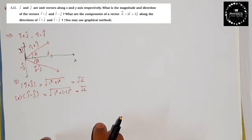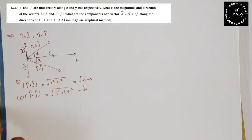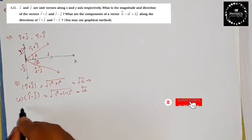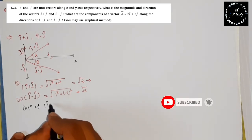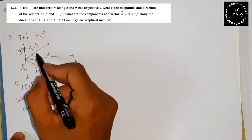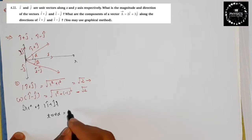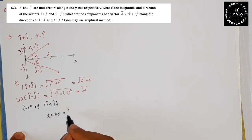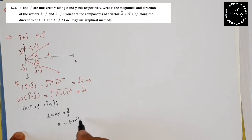Now let's define the directions of both. For the direction of (i+j), the angle alpha is given by tan(α) = y/x. The coefficient of j-cap is 1 and the coefficient of i-cap is also 1, so α = tan⁻¹(1) = 45 degrees.